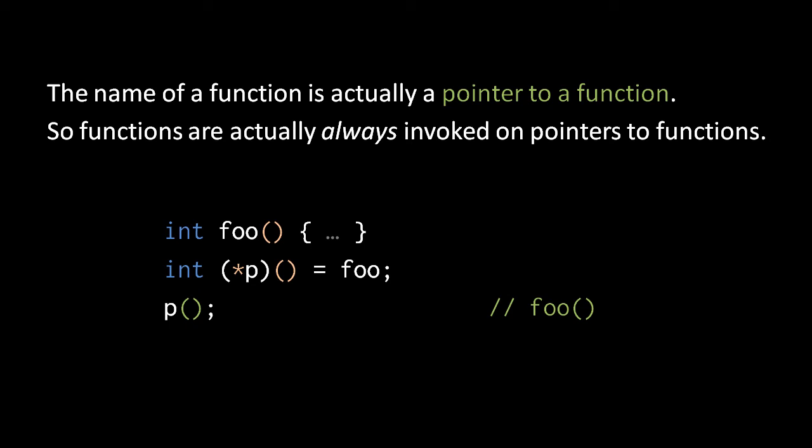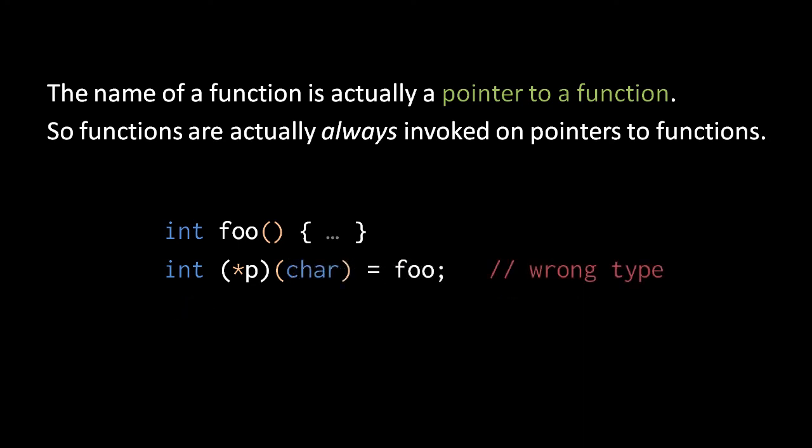For example, if we have some defined function foo, which takes no arguments and returns an int, then we can assign foo to a variable p, which is a pointer to a function taking no arguments and returning int. We can then invoke the function via the variable p, just as we could via the function name itself. Be clear that the argument and return types of a function are integral to the pointer's type, so if the p variable were a pointer to a function taking a char argument and returning int, it would not be a valid assignment target for foo.